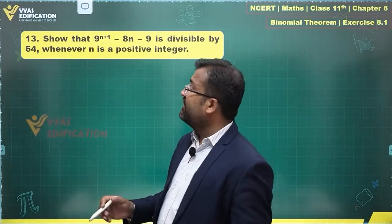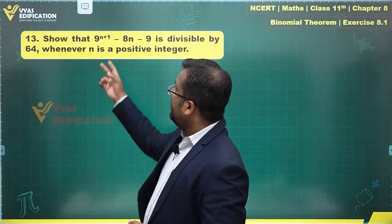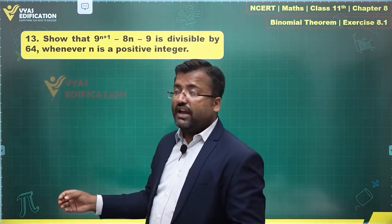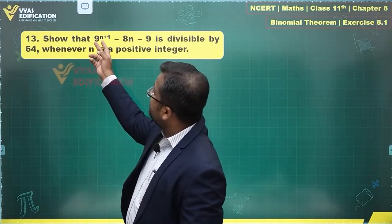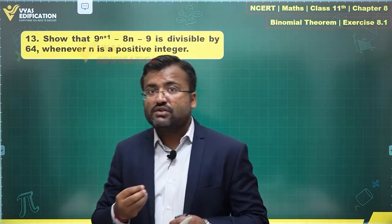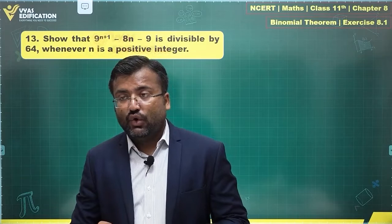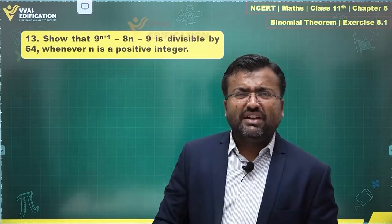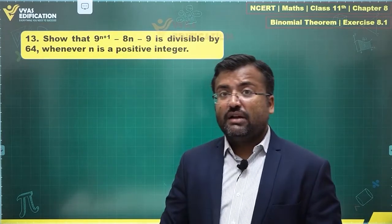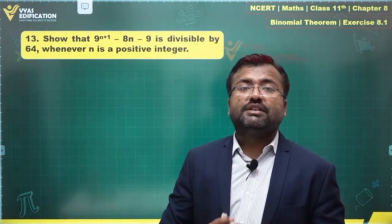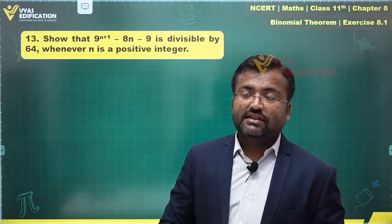The way they are related: 64 is the square of 8, and 9 can be written as 8 plus 1. So we'll begin with 9^(n+1) and try to use binomial expansion on this.